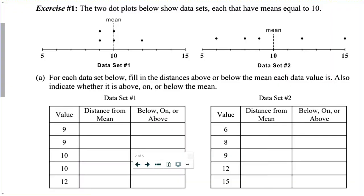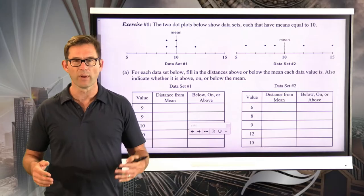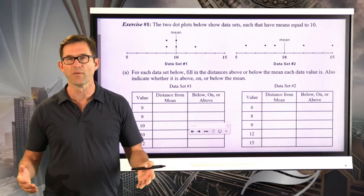The two dot plots below show data sets each with means equal to 10 — just trust me on that, we'll be able to verify it in our table work. For letter A, for each data set, fill in the distances above or below the mean each data value is, and also indicate whether it is above, on, or below the mean. Being on the mean just means that the data point is equal to the mean.